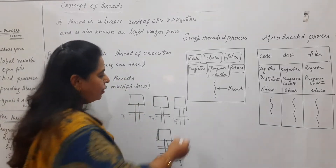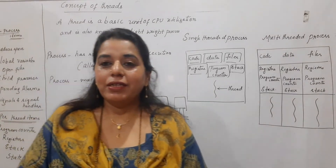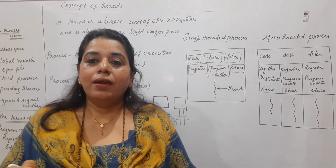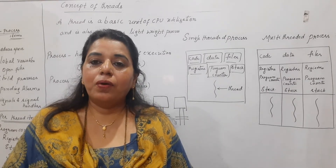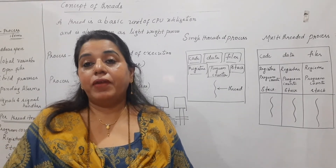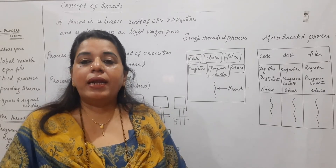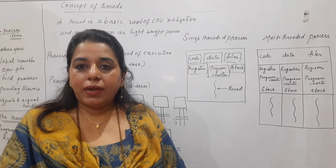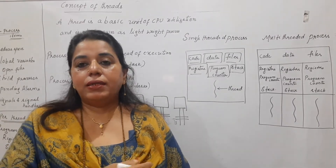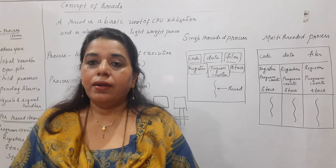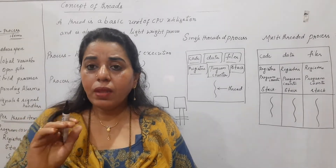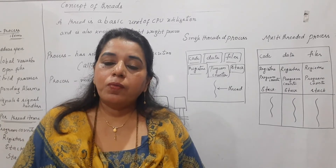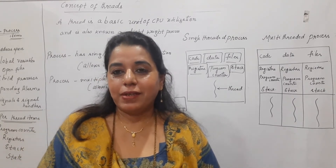So with this example, hope the concept of thread and process is very clear. Now we still have to know more differences between process and threads. This is just to understand the concept. The main difference: first, the address space, and the second difference is the overhead.